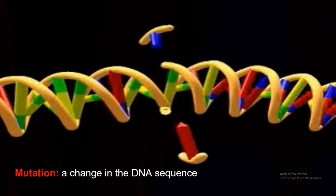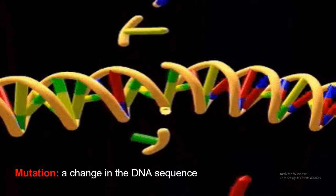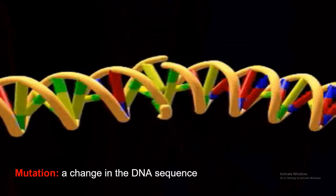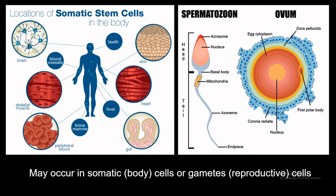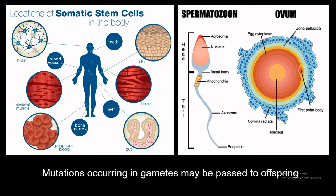A mutation is a change in the DNA sequence, as you can see up here. There's different nucleotides. This may occur in our somatic or body cells, such as the cells found in our teeth, our blood vessels, our heart, or our gametes, which are our reproductive cells, such as the spermatozoa or the ovum. Mutations occurring in gametes can be passed off to offspring, and it makes sense because they are reproductive cells.